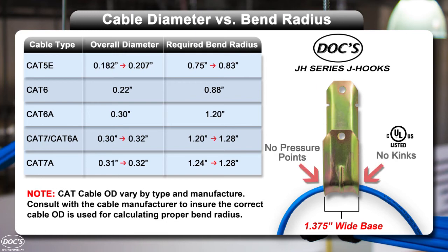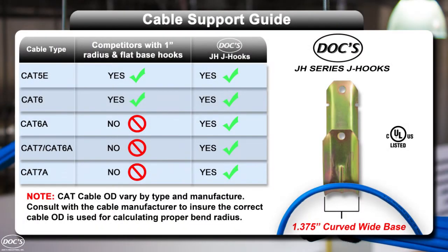Use a cable support that has a base wide enough to inherently maintain the minimum bend radius of your cable. Dock's J-h series J-hooks have a wide base support and beveled edges that maintain a minimum bend radius of 1.375 inches, which is optimum for high speed cables such as CAT-7A.